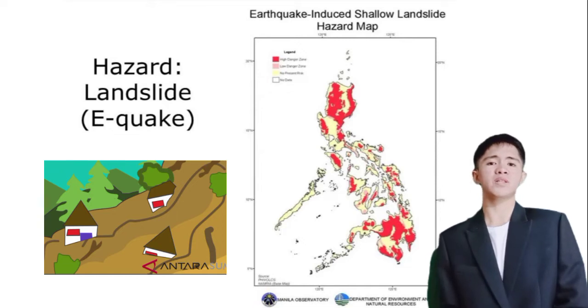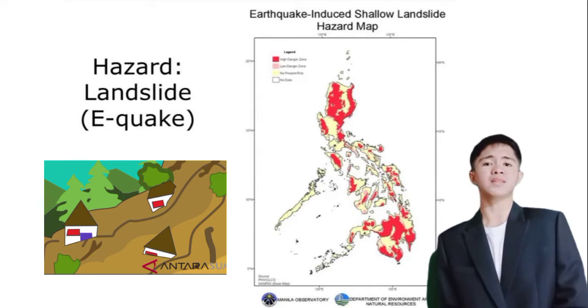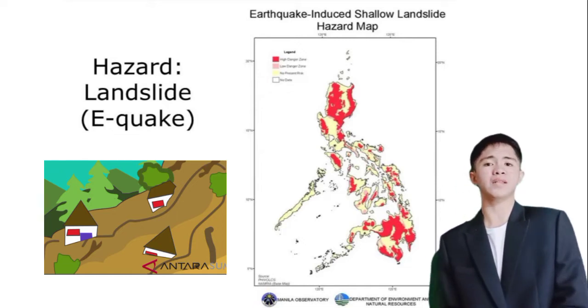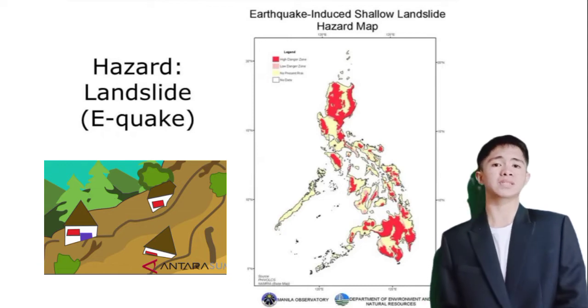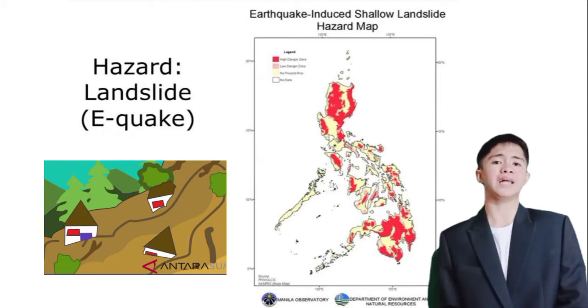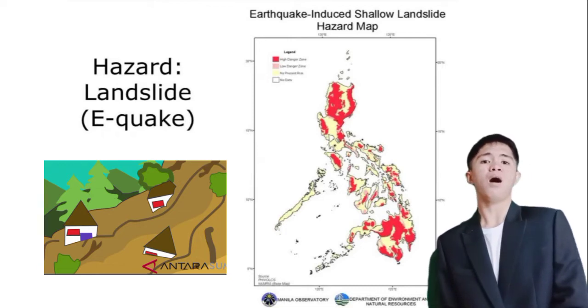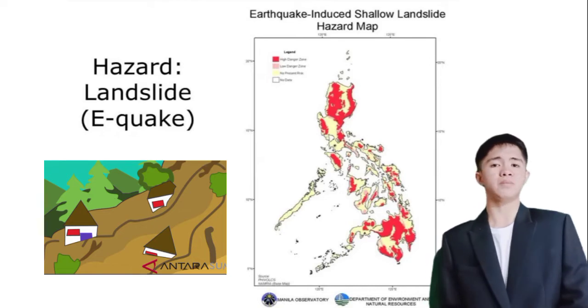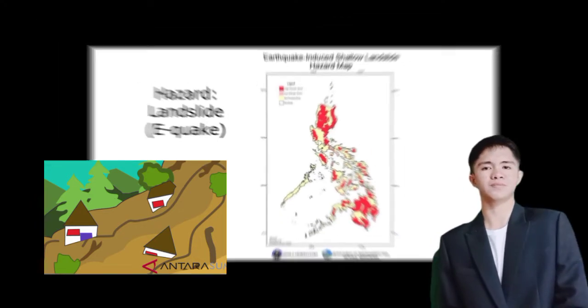Other high-risk provinces include Benguet, Mountain Province, Bukidnon, Aurora, Davao del Sur, Davao Oriental, and Rizal. The majority of provinces most at risk of landslides are placed in CAR and in Davao.